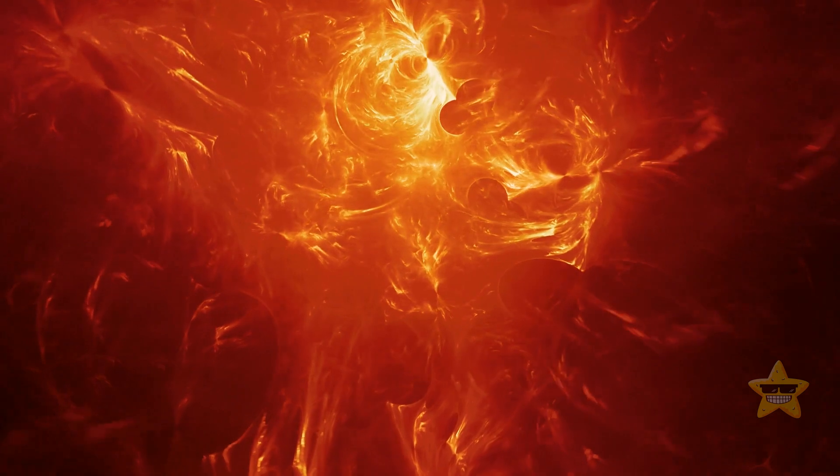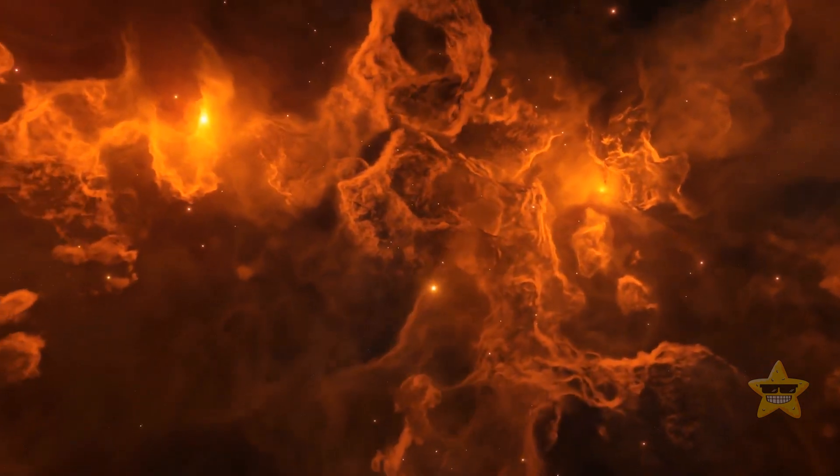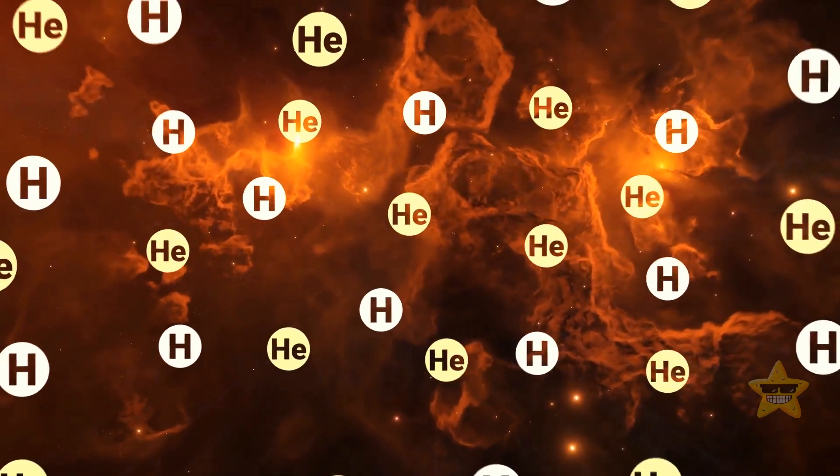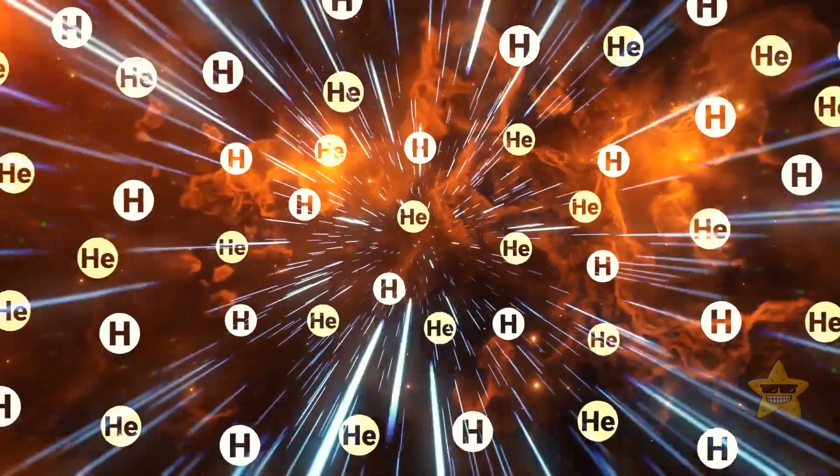When the cosmos was nearly a million times smaller than today, everything was just a plasma that later expanded, cooled and then converted into a neutral gas. That was the time when the first atoms formed. All these processes released enormous amounts of radiation.